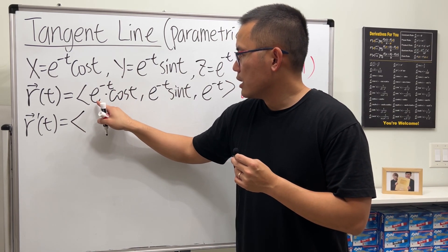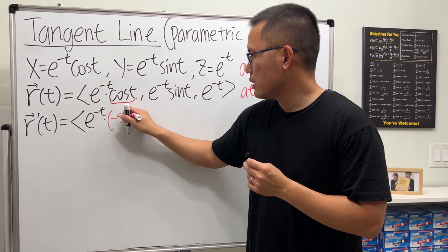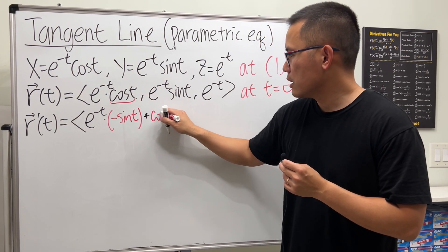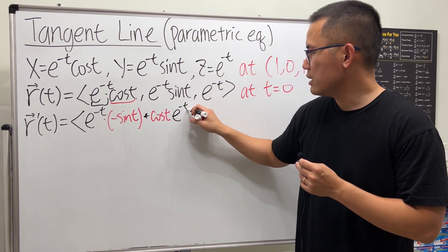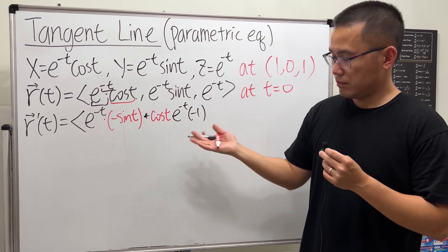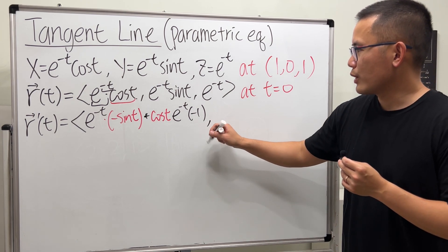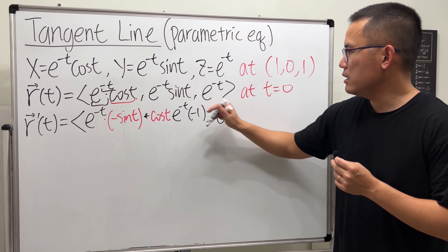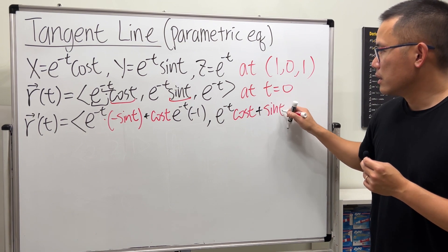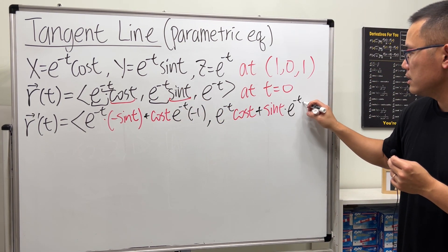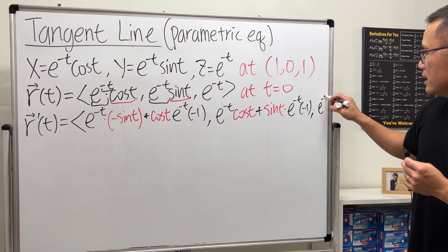Let's differentiate using the product rule: keep the first function and multiply by the derivative of the second, plus the second function times the derivative of the first. That gives us e to the negative T — and by the chain rule, multiply by negative 1. The same structure applies for the Y component. And the last component's derivative is e to the negative T times negative 1.